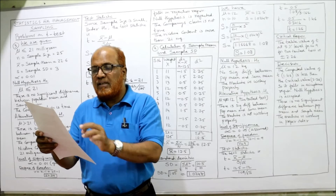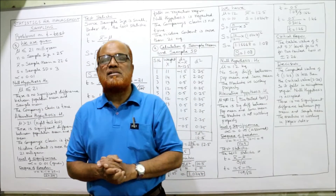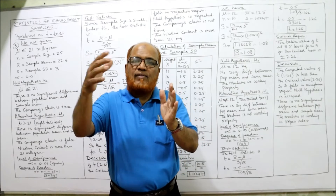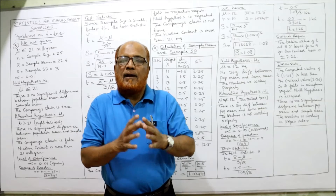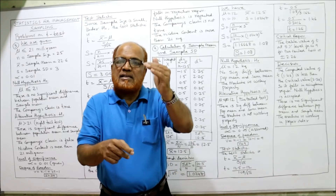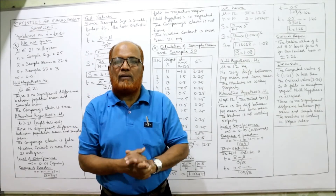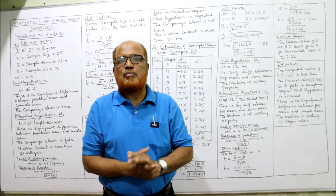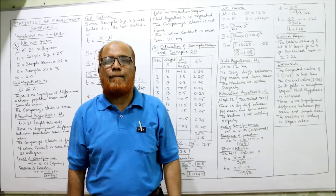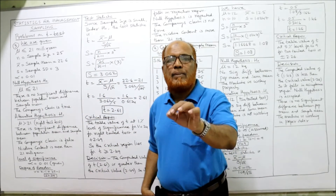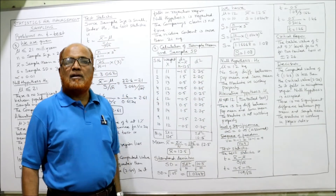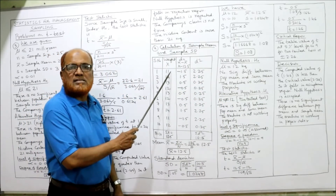The question asks whether there is reason to believe the machine is defective. A properly working machine fills exactly 12 kg per bag. A defective machine fills sometimes less than 12 and sometimes more than 12 kg. Unlike the previous problem, the sample mean and sample standard deviation are not given — we must calculate them from the data.